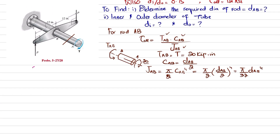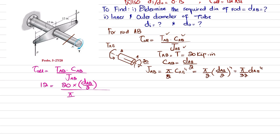Now putting everything into the formula: τ_allowable = T_AB · c_AB / J_AB. Substituting: τ_allowable is 12 ksi, c_AB is d_AB/2, and J_AB is (π/32)·d_AB⁴. Simplifying, we get 12 = 20 · (16 / (π · d_AB³)), because d_AB in the numerator cancels with one factor from the denominator, leaving d_AB cubed below with π and the factor of 16.